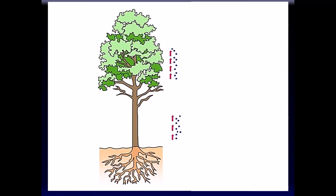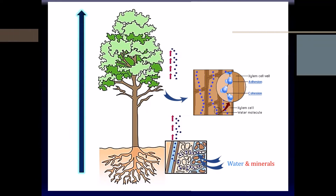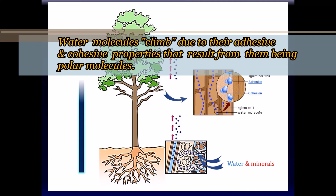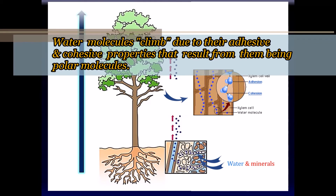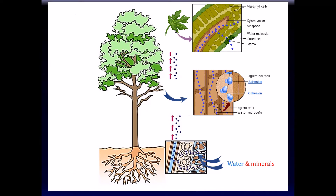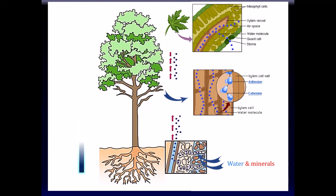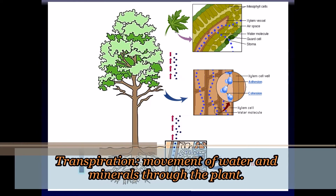Water enters the roots from the ground and drags minerals with it. It then climbs up the tree via capillary action, driven by the adhesive and cohesive properties of water as a polar molecule, through tiny capillaries called the xylem. At the periphery of the plant, water evaporates through special pores called stomata or from the leaves in general. This process of transpiration also helps keep the plant cool and regulate its temperature.